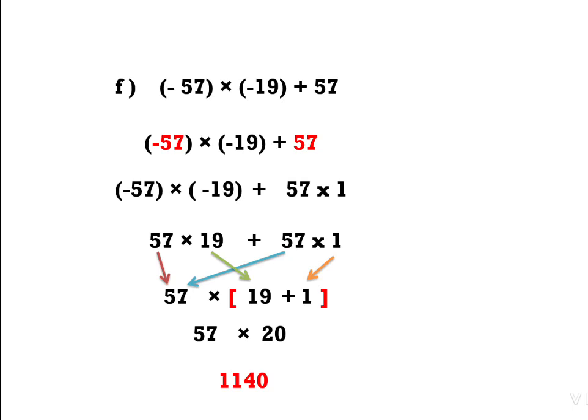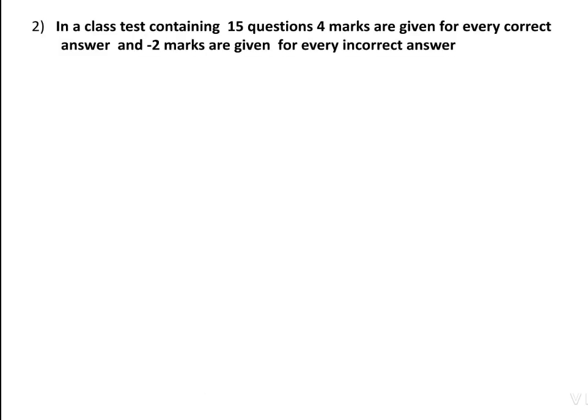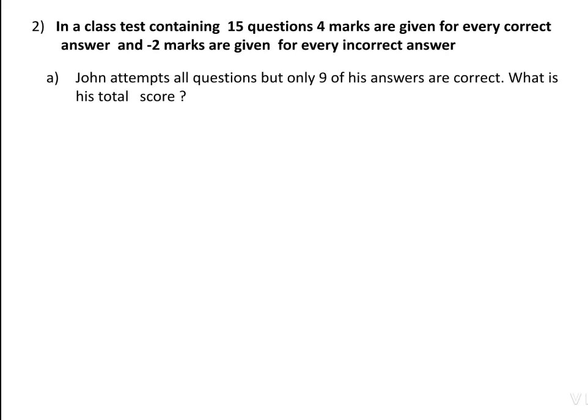Next, one word problem. In a class test containing 50 questions, 4 marks are given for every correct answer and −2 marks for every incorrect answer. This is like our VTSC examination where there are negative marks. If one answer is correct you get 4 marks, but if one answer is incorrect, 2 marks decrease. First question A: John attempts all questions but only 9 answers are correct. What is his total score?